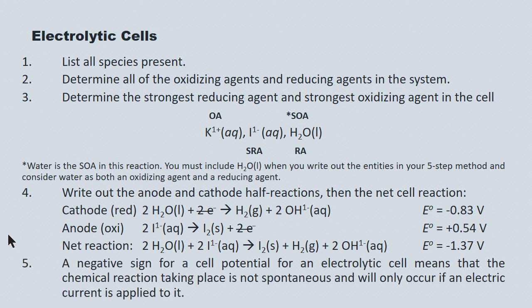A negative sign for a cell potential in an electrolytic cell means we're looking at a non-spontaneous reaction, so an external power supply has to be applied to run the reaction.